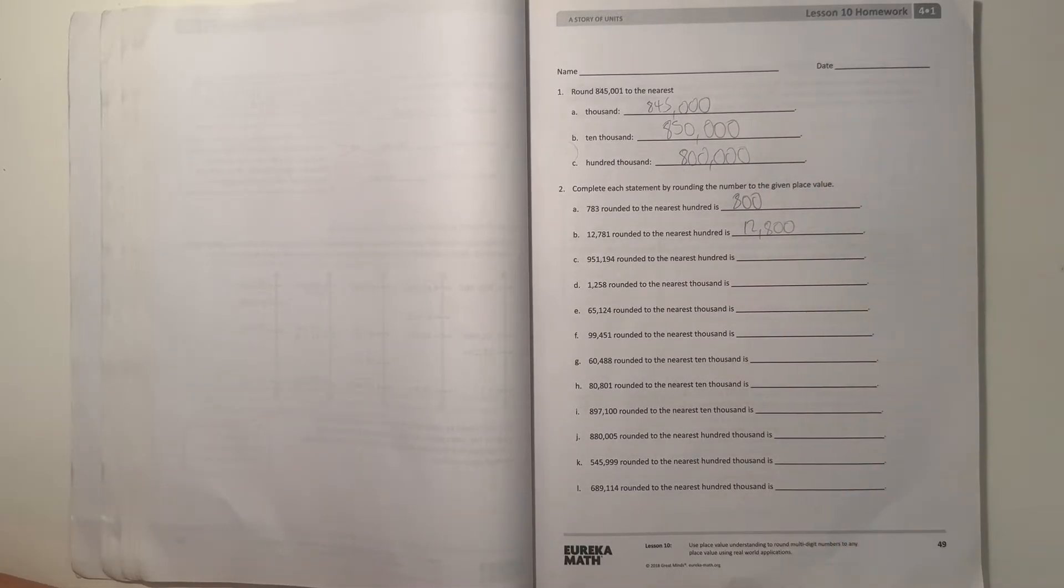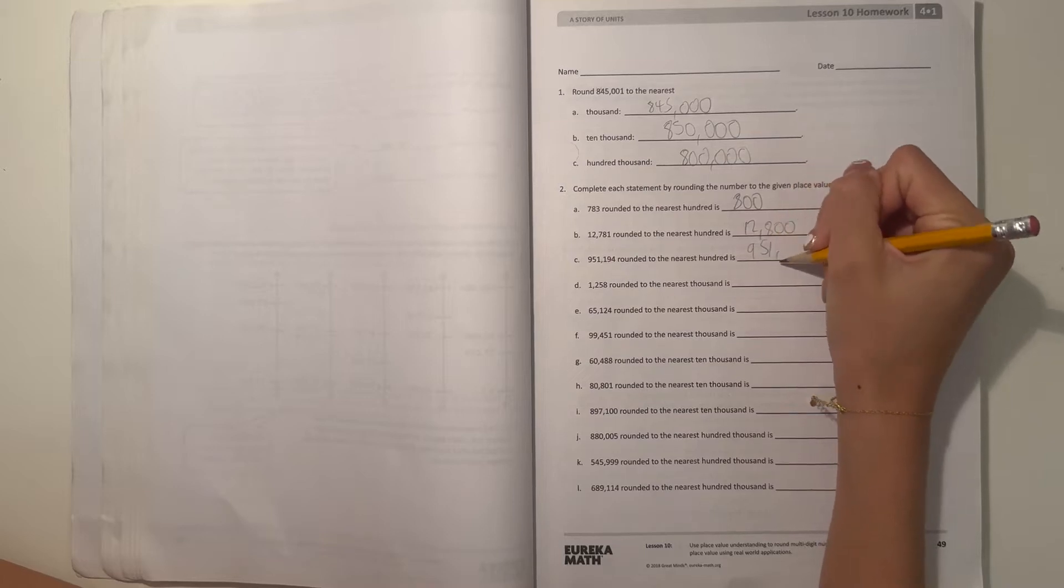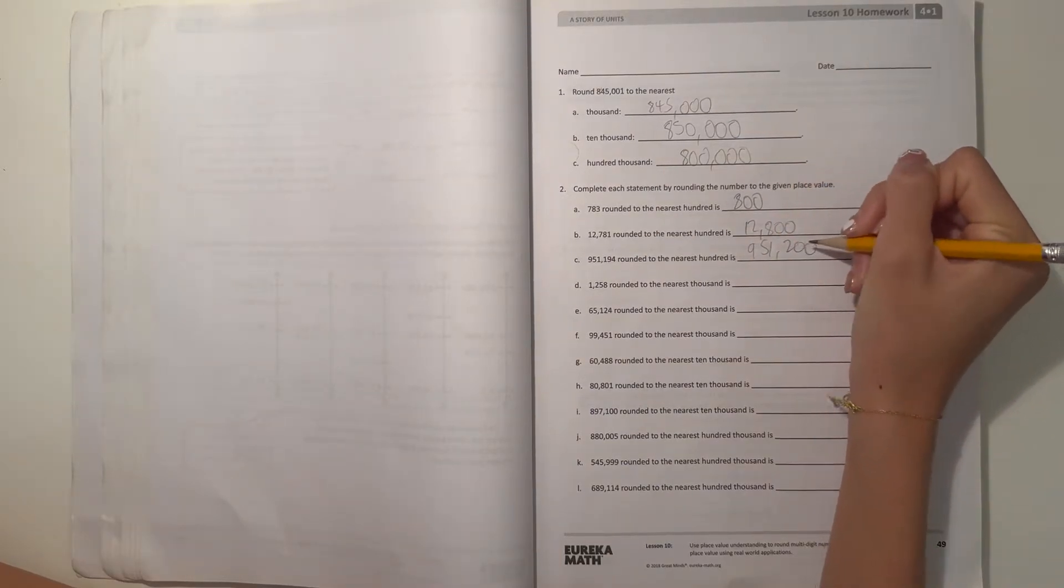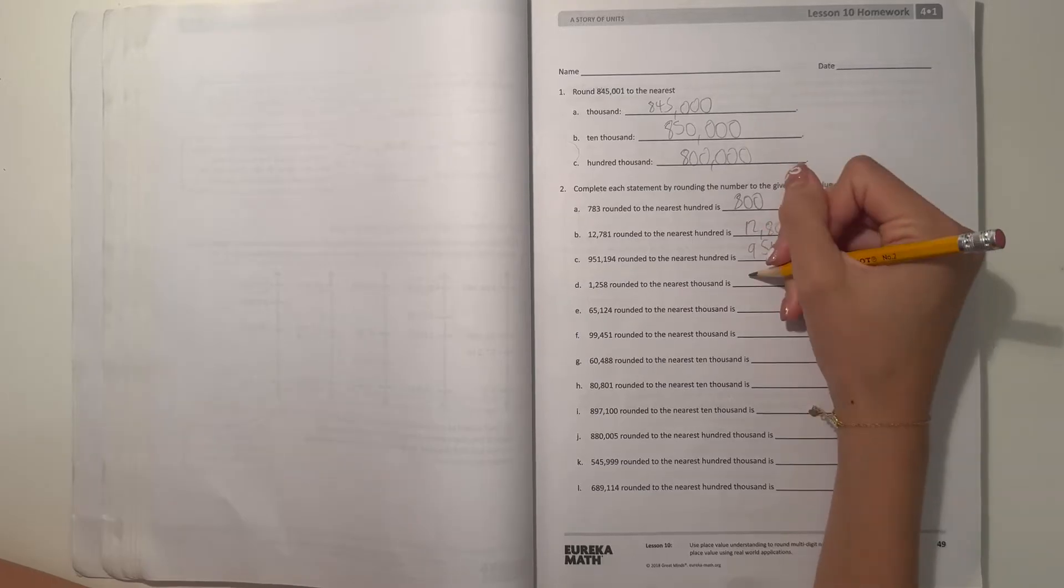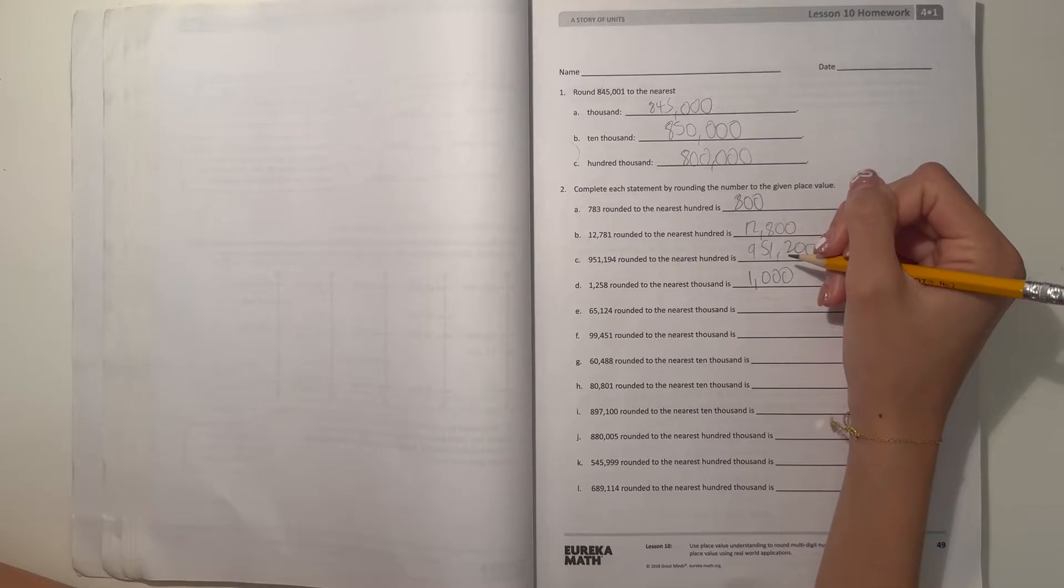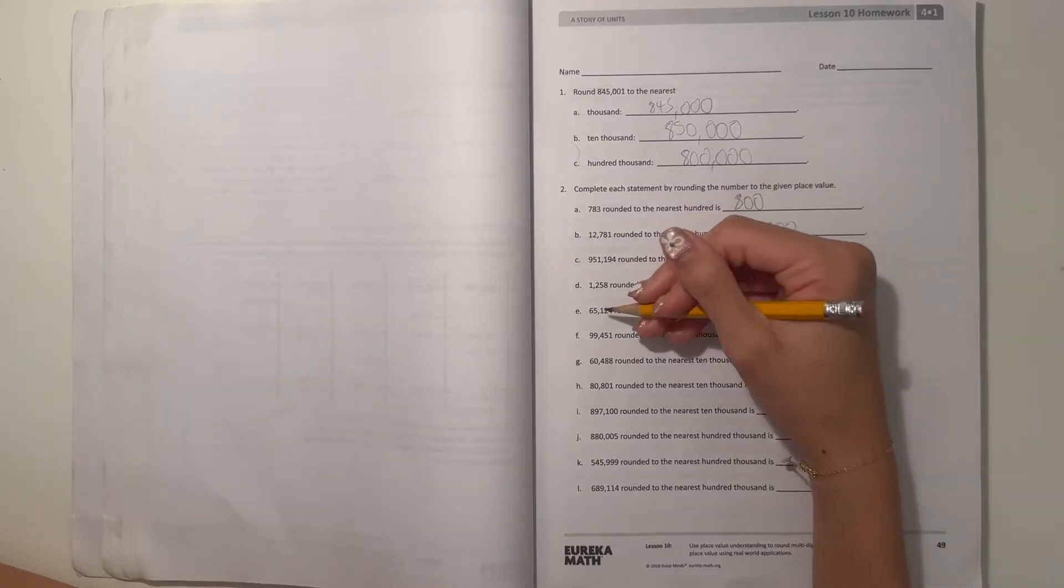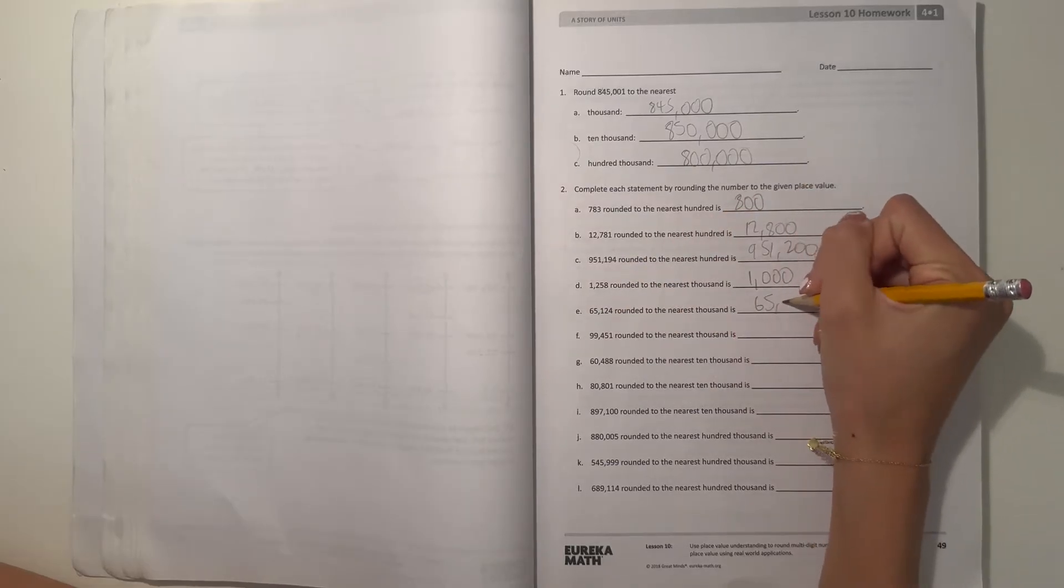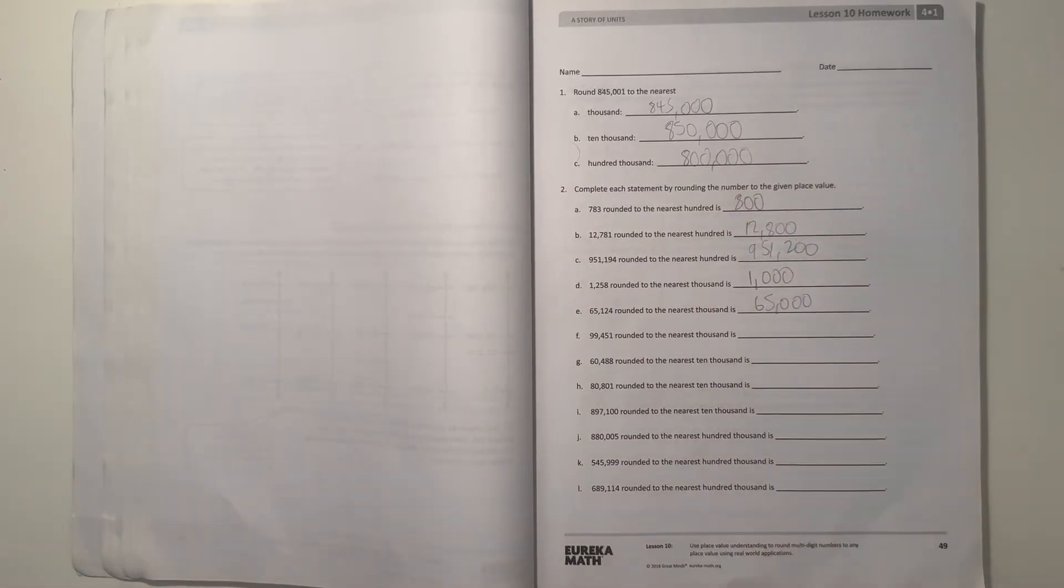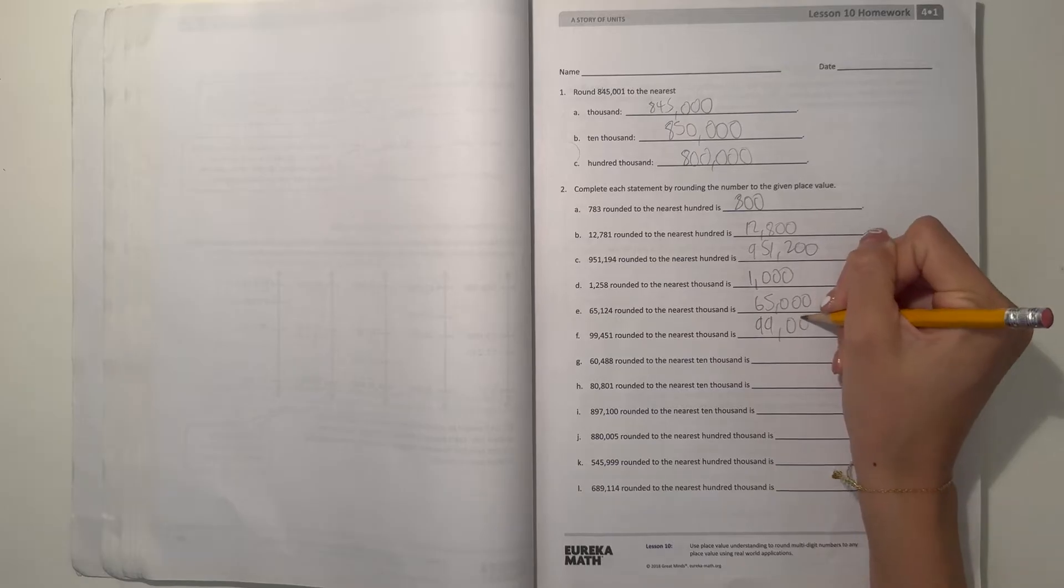951,194 to the nearest hundred, which is over here, would be 951,200. And 1,258 rounded to the nearest thousand would go back to 1,000. 65,124 to the nearest thousand would be 65,000. 99,451 to the nearest thousand would just be 99,000.